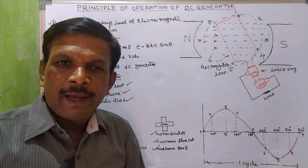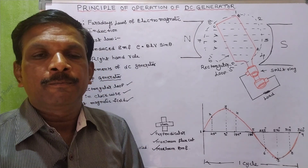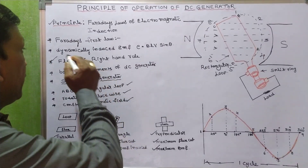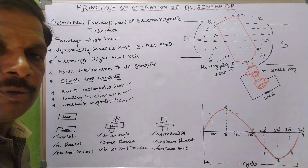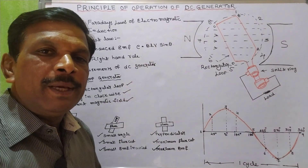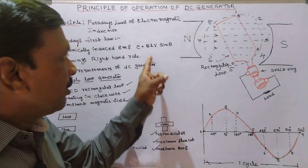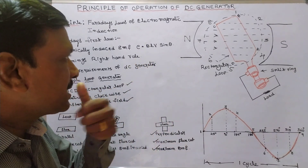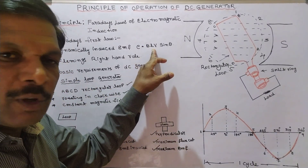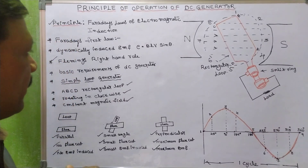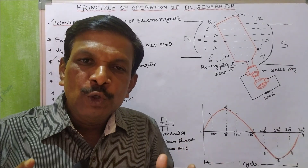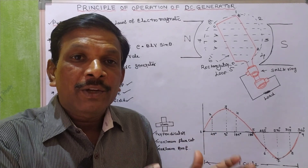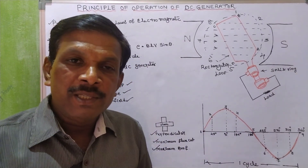This EMF is always a dynamically induced EMF. The formula is E = BLV sin(θ), where E is the magnitude of EMF, B is the flux density, L is the active length of the conductor, and V is the velocity of the conductor.